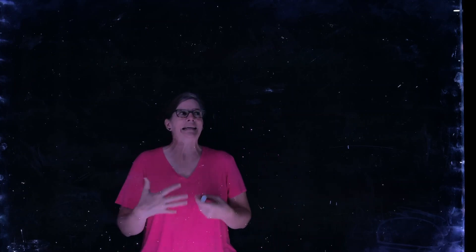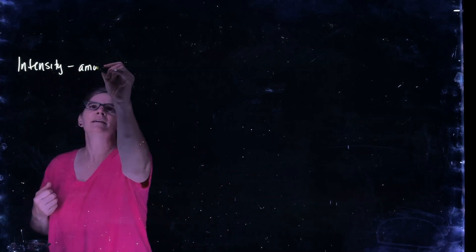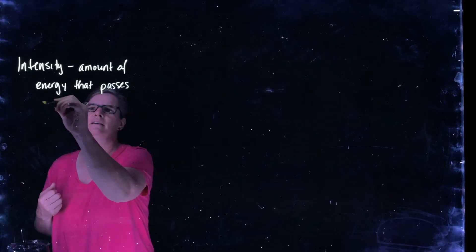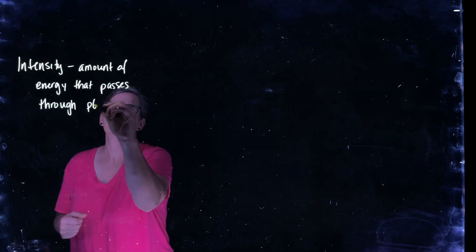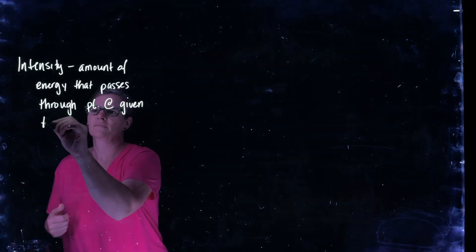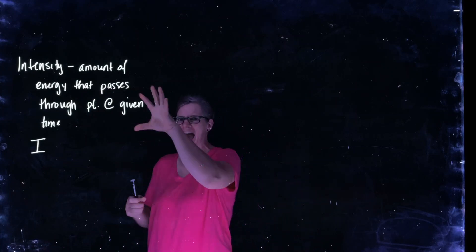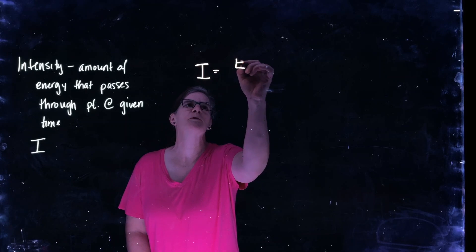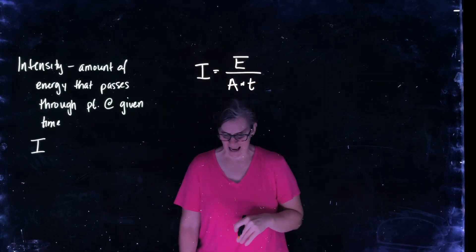So we're going to talk first about intensity. That's going to be our foundation. Now, intensity in general definition of intensity is the amount of energy that passes through an area at a given time. We're going to define intensity with this capital letter I. So if we put that description into a mathematical equation, we have that intensity is equal to the energy that passes through an area at a given time.